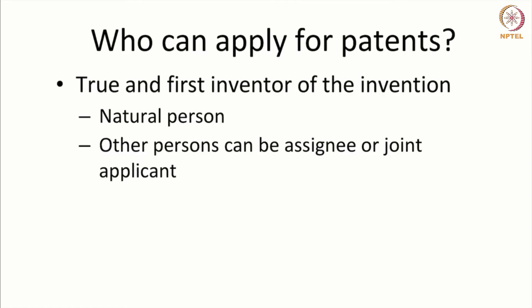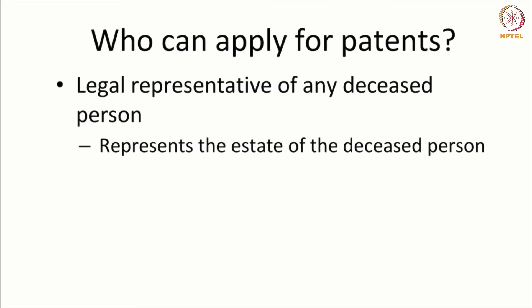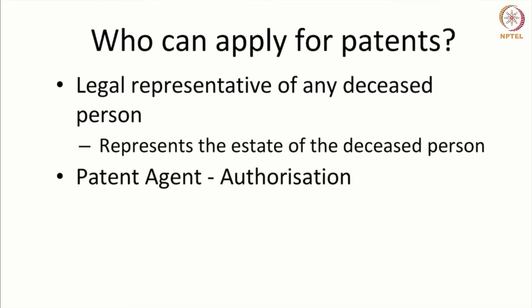An applicant can be the true and first inventor, or it can be an assignee, or it could also be a legal representative of the true and first inventor or the assignee. The third category is the legal representative of any deceased person who was the true and first inventor or who was an assignee. These three categories define who can apply and in what capacity a person can apply.